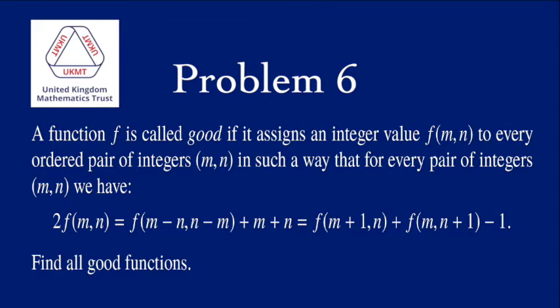In such a way that for every pair of integers m and n, we have 2 times f(m,n) equals f(m-n, n-m) plus m plus n, and it's also equal to f(m+1, n) plus f(m, n+1) minus 1.